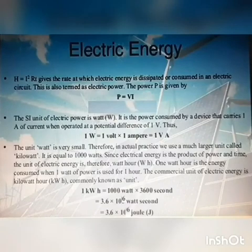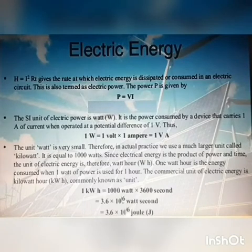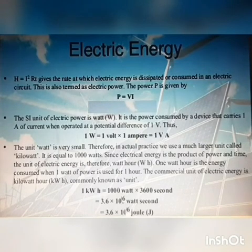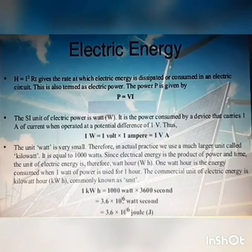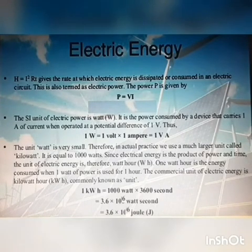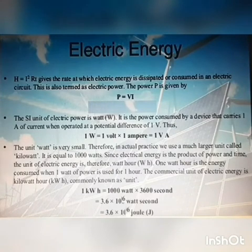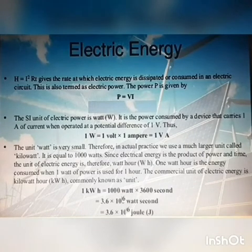Now we are going to learn about electric power. We know that H equal to I squared RT gives the rate at which energy is consumed in an electric circuit. This is also known as electric power. Electric power is denoted by capital P and is given by P equal to VI. The unit of electric power is watt, equal to volt into ampere. The unit watt is very small, so in practice we use a much larger unit called kilowatt. One kilowatt means 1000 watt.